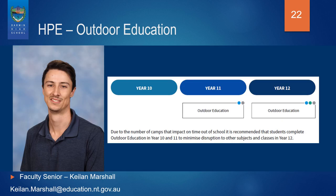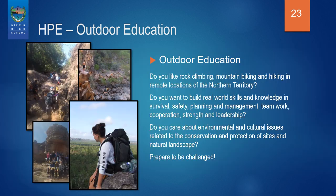Stage 1 Outdoor Education is a course for students who have an interest in rock climbing, mountain biking and hiking in remote locations of the Northern Territory. Students build real-world skills and knowledge in survival, safety, planning and management, teamwork, cooperation, strength and leadership.